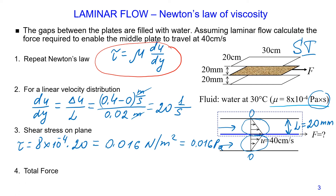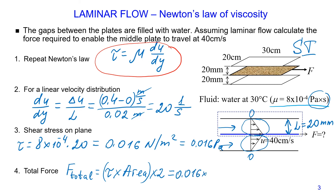Now we can calculate the total force. The total force equals the shear stress on one side multiplied by the area on one side, multiplied by 2 for both sides. Therefore it equals 0.016 multiplied by the area (0.2 m × 0.3 m) multiplied by 2, giving a total force of approximately 1.92 × 10⁻³ newtons.